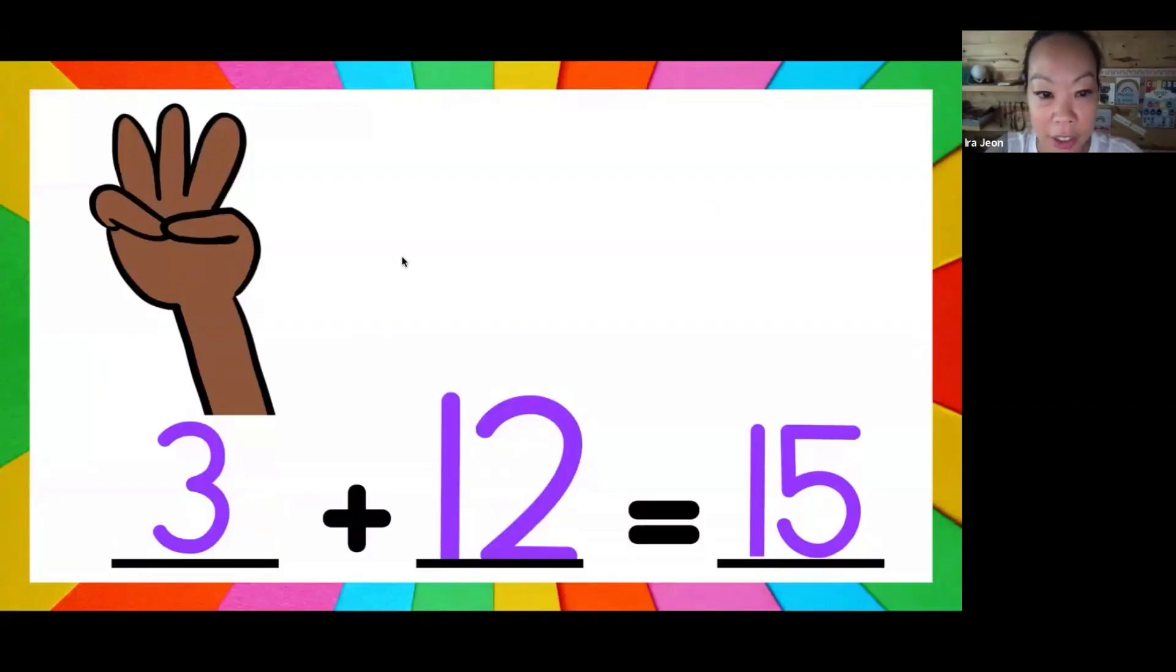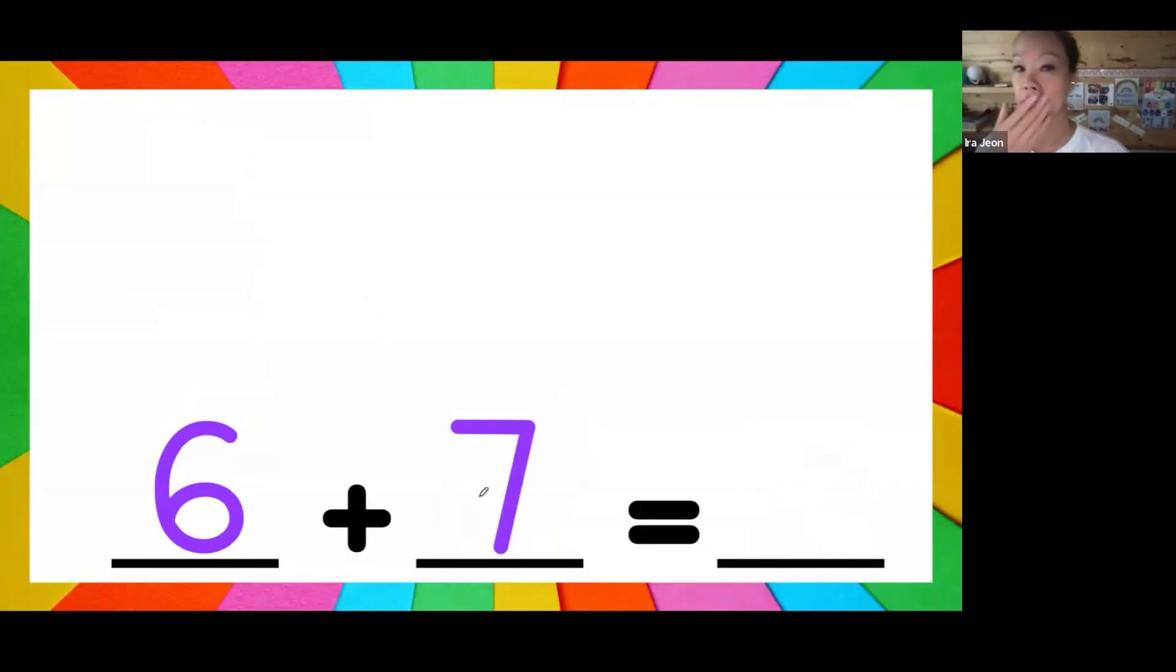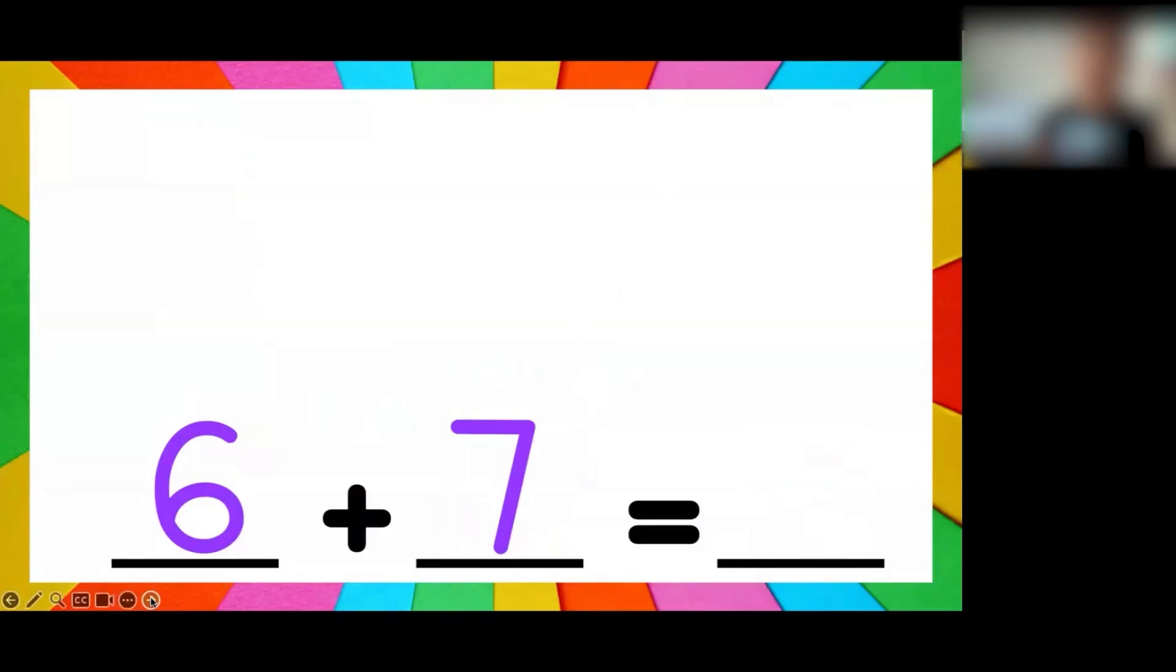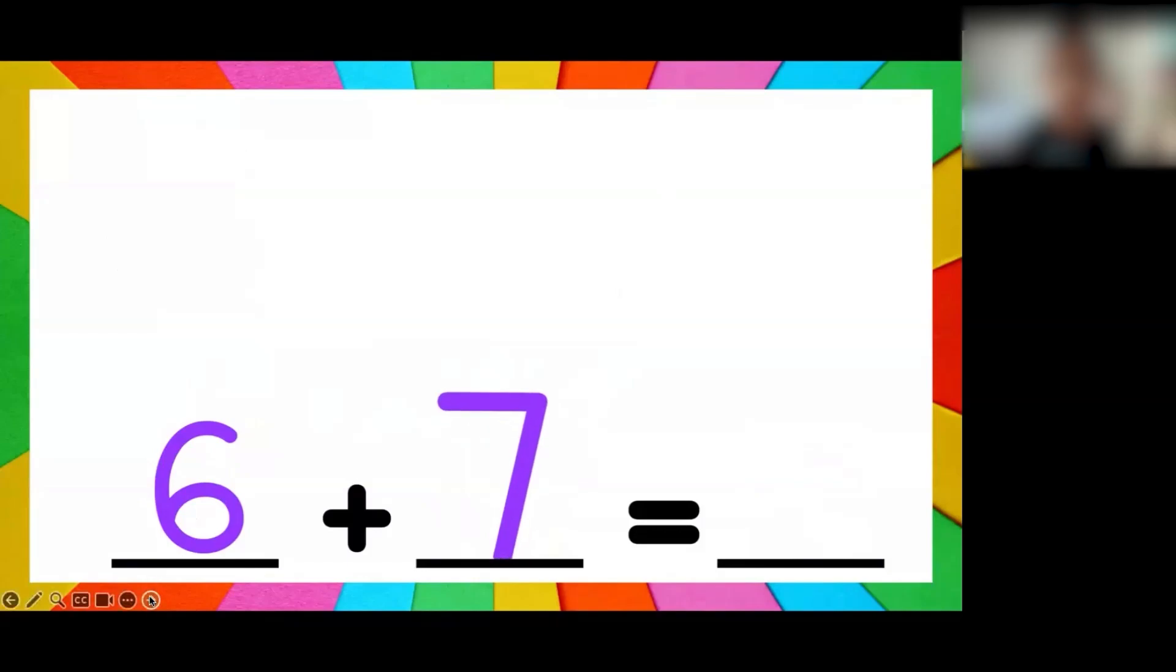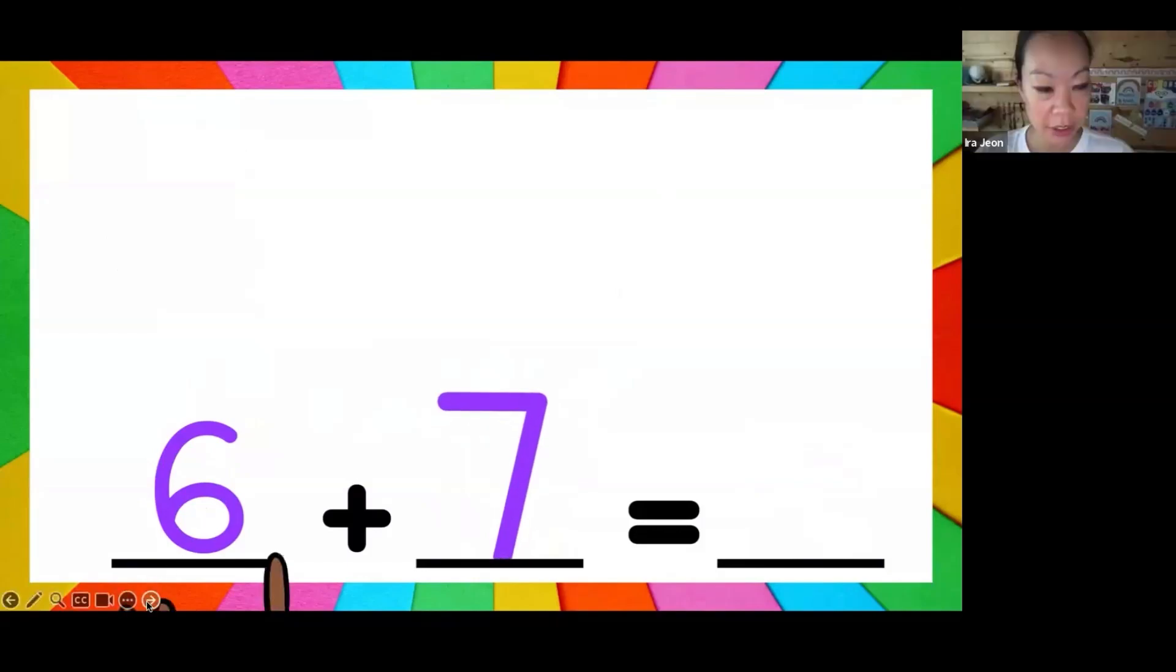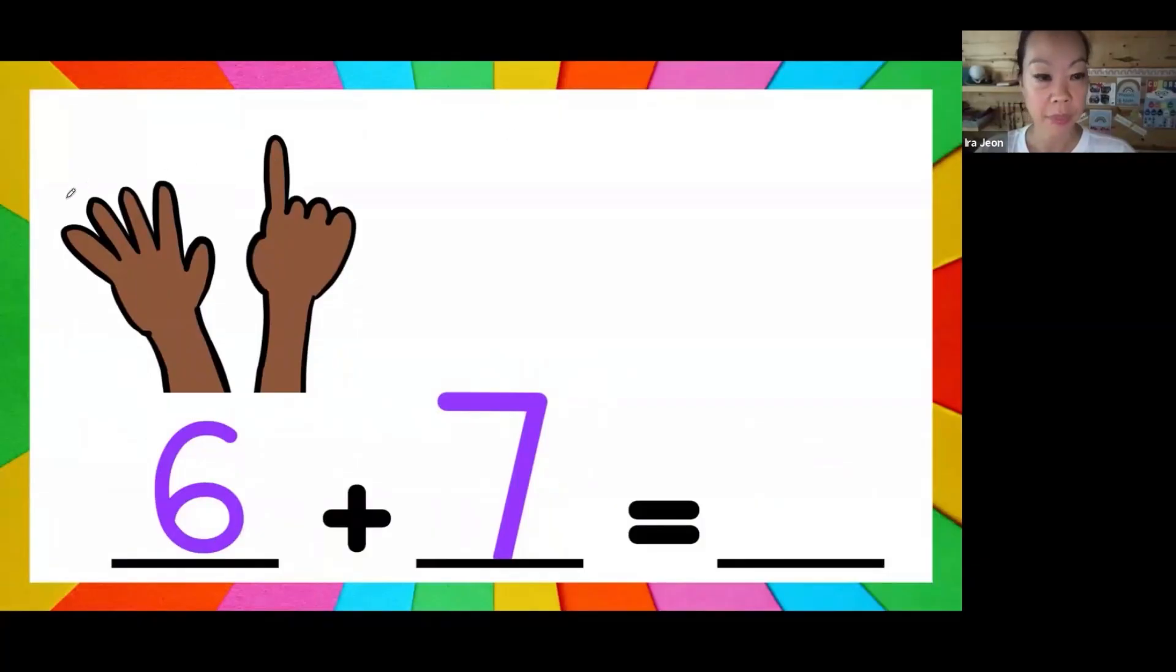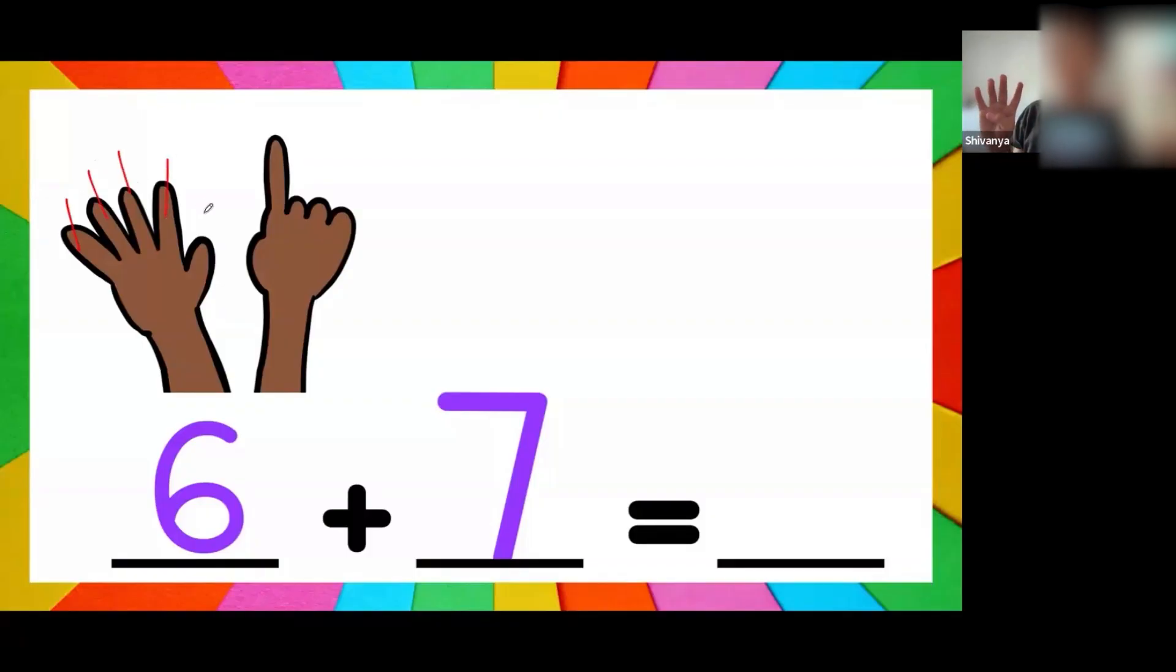How about this one? Now this one we're going to have to hold up two fingers, right? What number should I count on from? Yes Shivania, um 19? That's close, but it's not 19. I think you might have some memorized, right? But if you're not sure, then try the counting on method. So what number is bigger, six or seven? Seven, good. So seven, put in your mind, hold up six fingers and count on from 7: eight, nine, ten, eleven, twelve, thirteen. Yeah, it's 13.